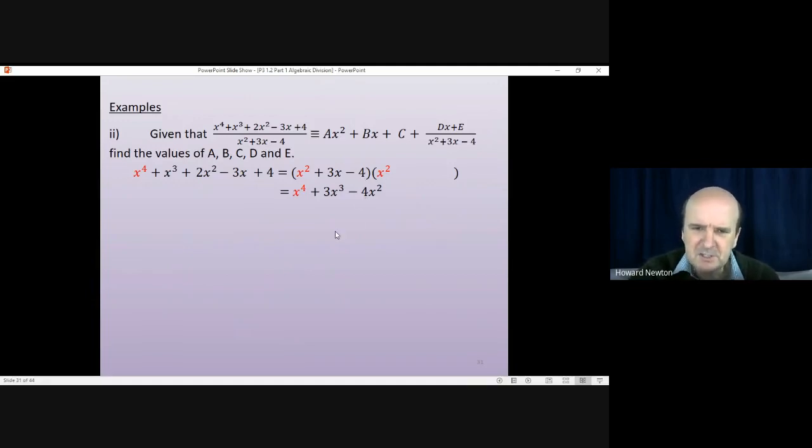Then we move on to the x cubed. I want 1x cubed. I've got 3x cubed. That means that I need to take away 2x cubed. In order to take away 2x cubed, here, I need to write minus 2x, because when I times it by the x squared, I'll get minus 2x cubed. That's the x cubed sorted. Again, just be careful to keep track of all the extra things you get. 3x times by the minus 2x and minus 4 times by the minus 2x. That gives me minus 6x squared plus 8x.